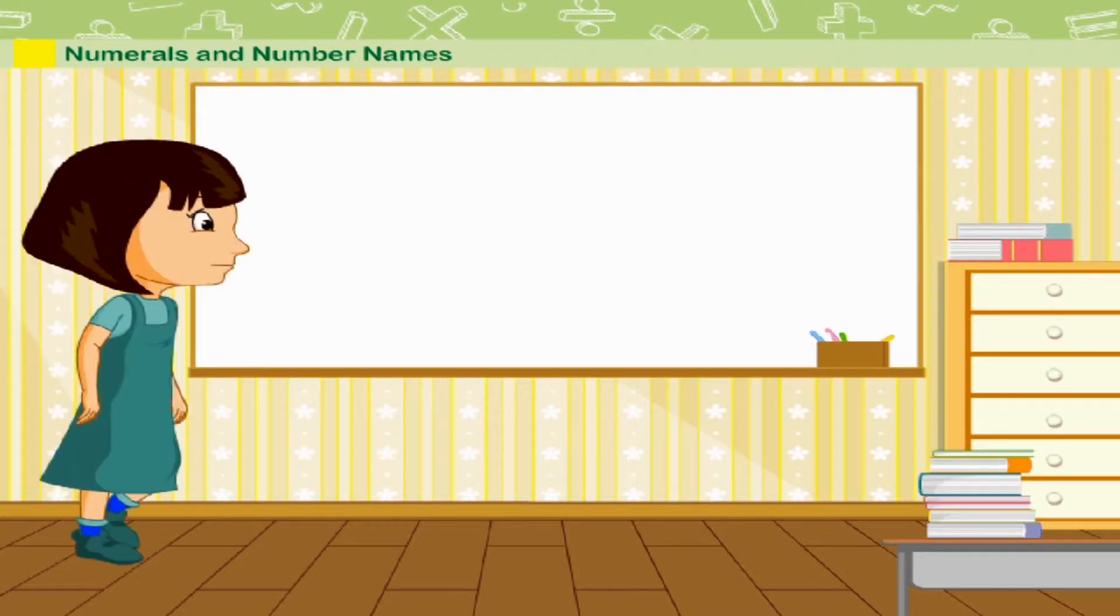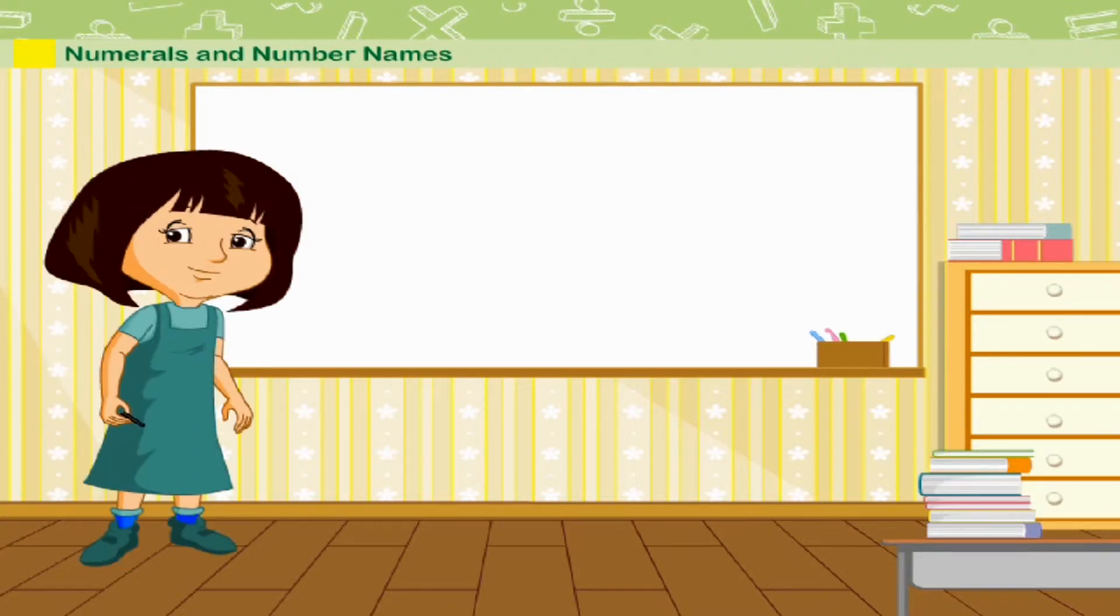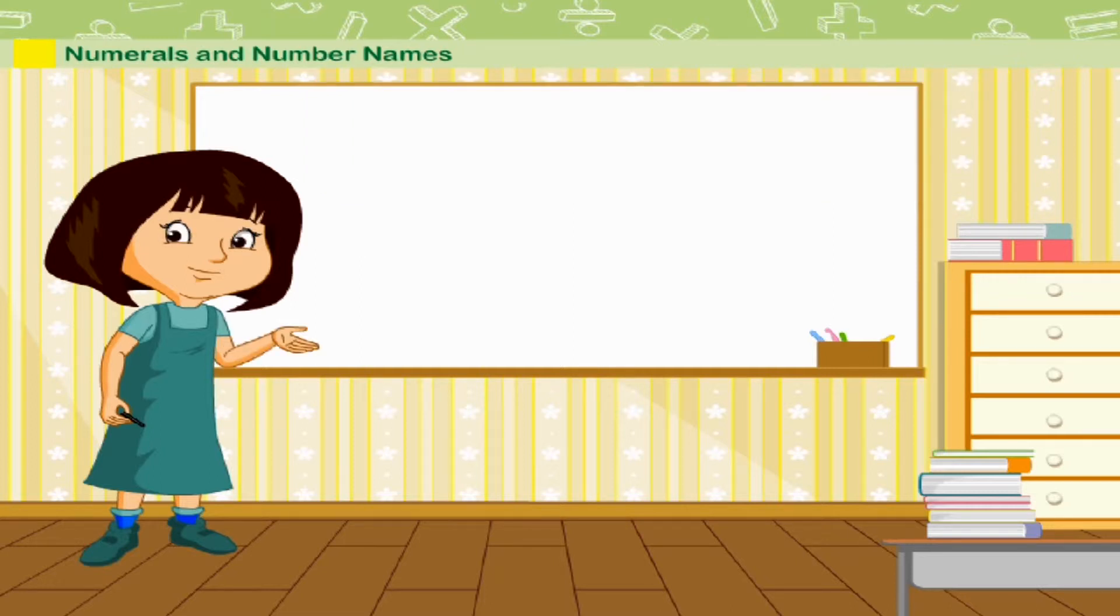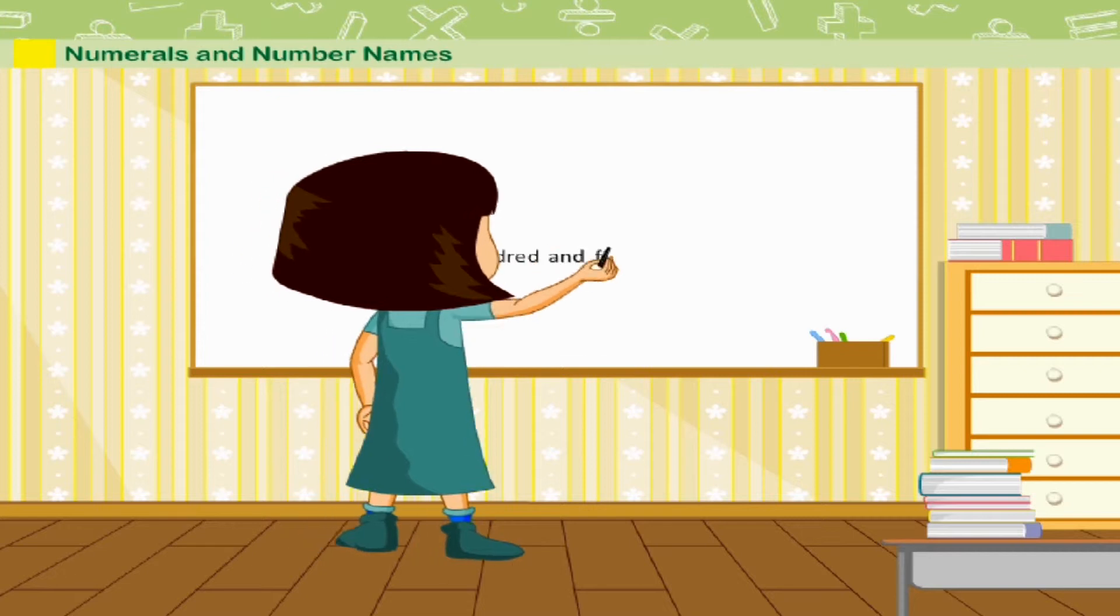Numerals and Number Names. Isha wants to know how numbers can be written. Teacher Meeta tells her that numbers can be written in two forms. In words, number names, for example, one hundred and fifteen.